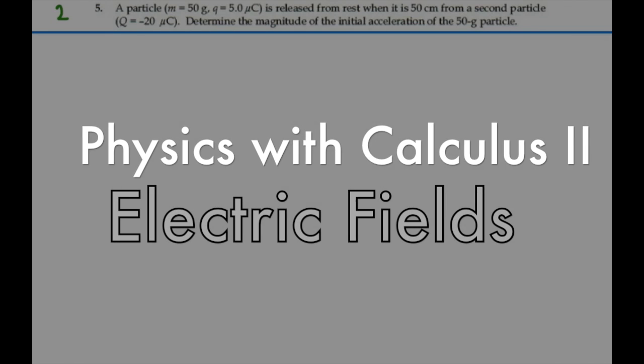Let's take a look at 23.5. A particle mass 50 grams, charge 5 microcoulombs, is released from rest when it's 50 centimeters from a second particle of charge minus 20 microcoulombs. Determine the magnitude of the initial acceleration of the 50 gram particle.